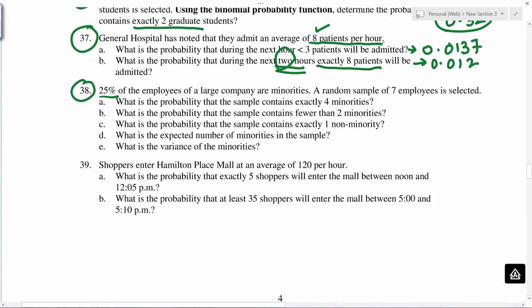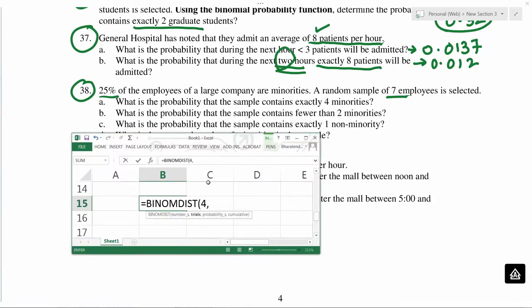25 percent is given. Sample size of seven is given. Exactly four minorities, so exactly four. N is seven, p is 0.25, and because it is exactly four, we say false. So 0.05768.